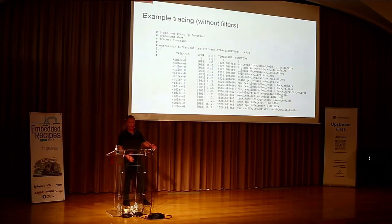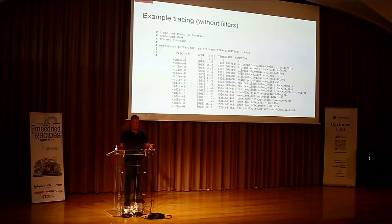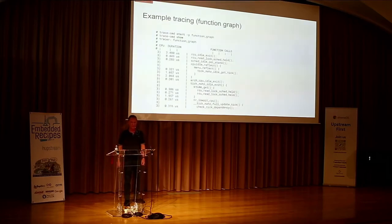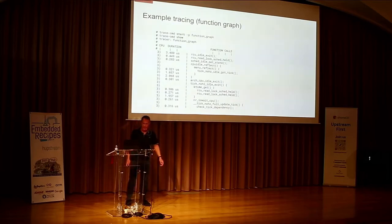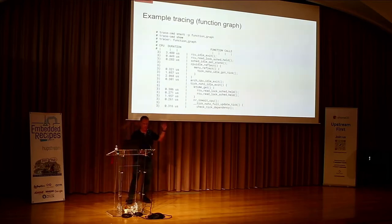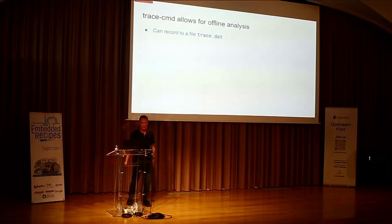Without filters, you see every single function running on the kernel — it gets kind of complex. You'd also use the tracer called Function Graph Tracer, originally written by Friedrich Weisbecker, and it gives you a nice C-like indented output. If you've seen my other talks, you've seen all this, but this is the way you do it from TraceCMD.